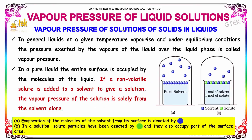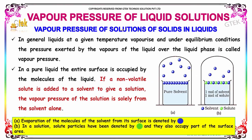Let's discuss the vapor pressure of a liquid solution. In general, liquids at a given temperature vaporize, and under equilibrium conditions, the pressure exerted by the vapors of the liquid over the liquid phase is called vapor pressure. In a pure liquid, the entire surface is occupied by the molecules of the liquid. If a non-volatile solute is added to a solvent to give a solution, the vapor pressure of the solution is less than that of the solvent alone.